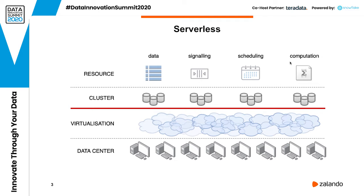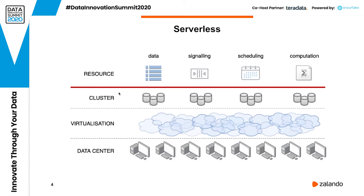If we think about what it means to go serverless, it actually means we are moving this red line one layer higher and hiding away all the instances and clusters from the customer. The customer is no longer buying access to clusters or instances — they are buying access to actual resources like S3 buckets for storage, DynamoDB tables, AWS SQS queues for signaling, AWS Step Functions instead of an Airflow cluster, and Amazon Lambda for computation.